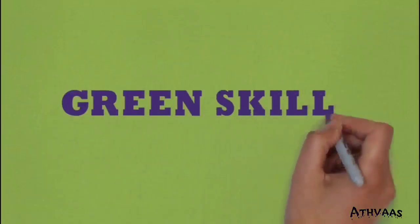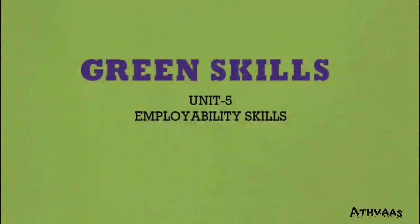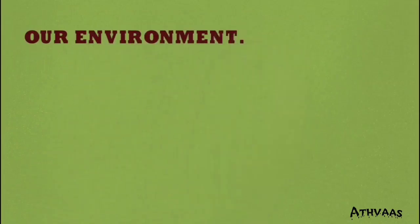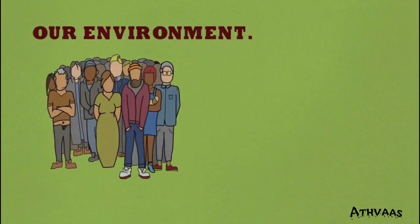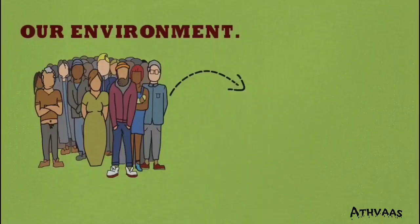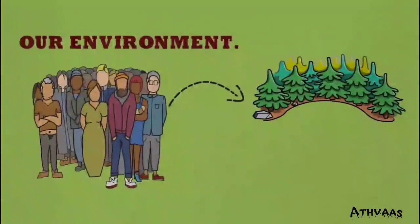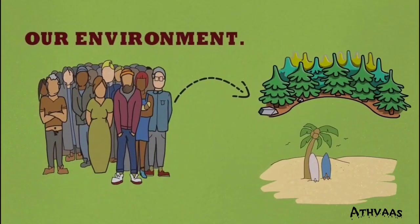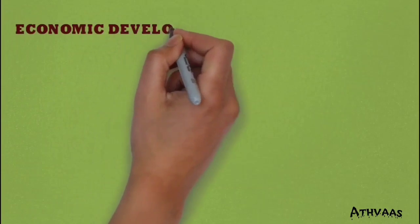Our first topic is green skills. It is the last unit of our book, Employability Skills. Before getting into green skills, we should take stock of our environmental conditions. The people living in cities near lakes are directly dependent on natural resources — for example, forests, lakes, and other water bodies.